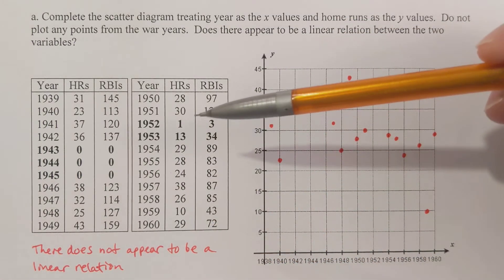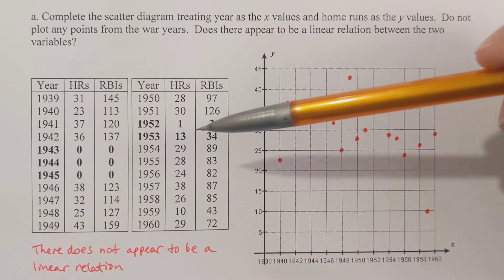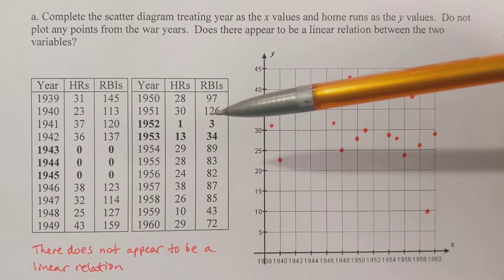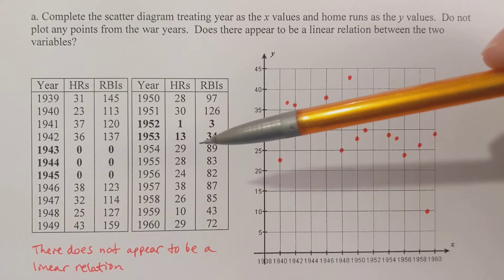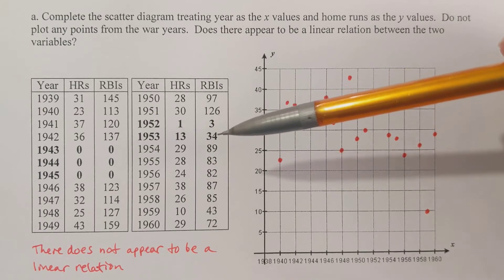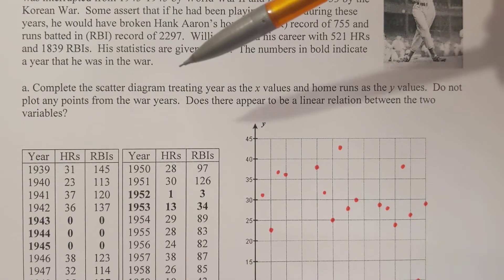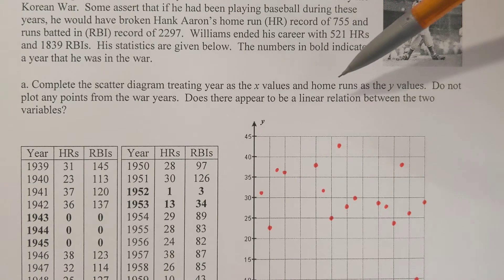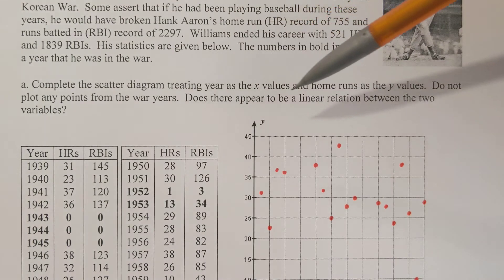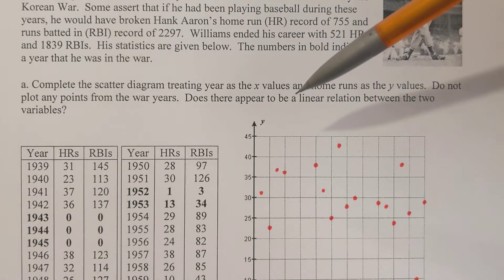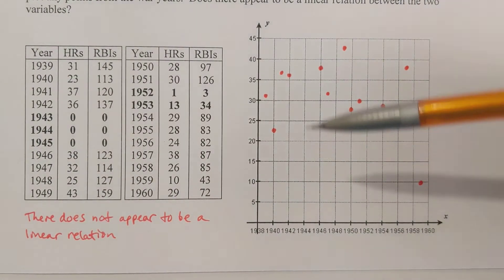The numbers in bold indicate the years he was in the war: 1943, 1944, 1945, 1952, and 1953. For 1952 and 1953 we're going to assume those are 0 — that he didn't play at all. We're basically going to come up with new numbers to represent what we think his home run and RBI production would have been. Part A: complete the scatter diagram treating year as the x values and home runs as the y values, and do not plot any points from the war years.